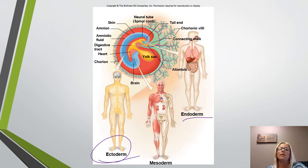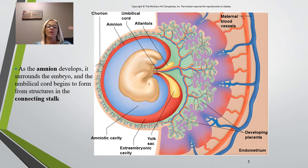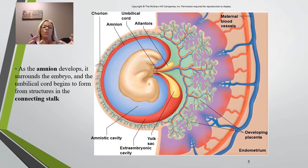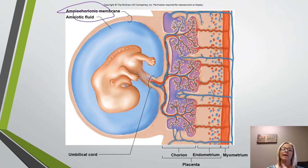The chorion projects into the endometrium and it's going to help form the placenta. The amnion is a membrane that encircles the developing embryo, and you can also see the yolk sac here. The amnion will develop and surround the embryo, and the umbilical cord is going to form from these structures in the connecting stalk.